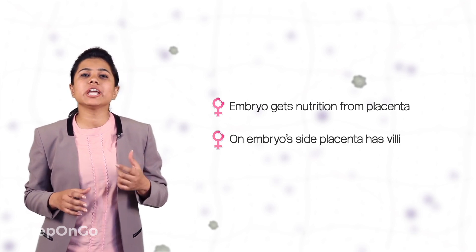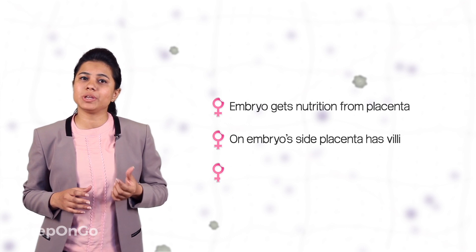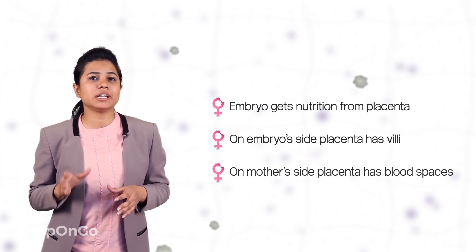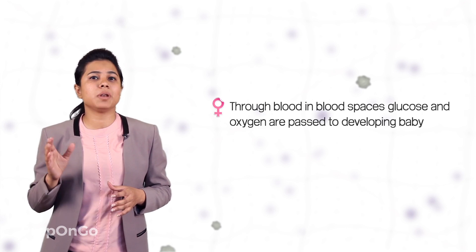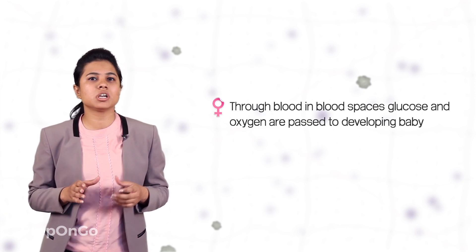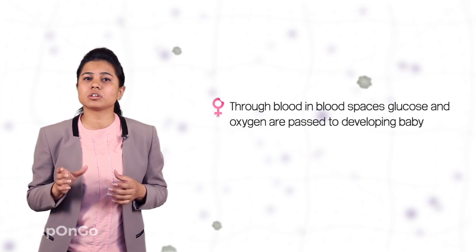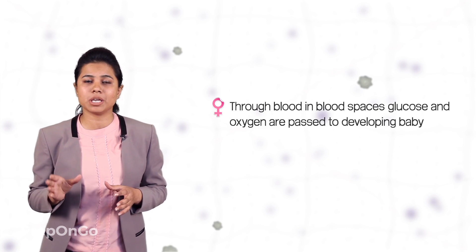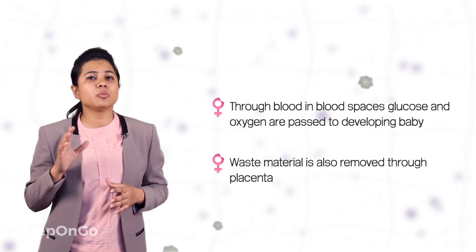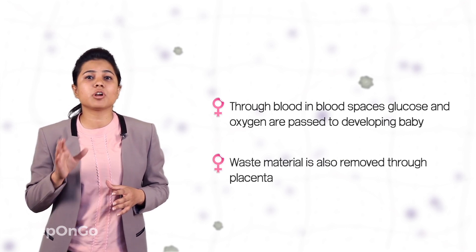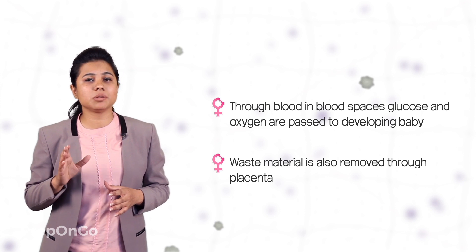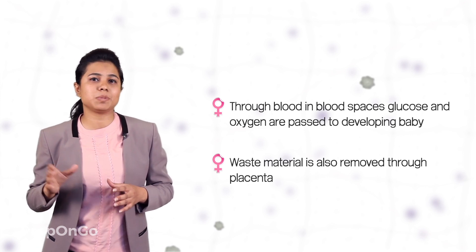On the embryo side, the placenta has villi and on the mother's side it contains the blood spaces. Villi contain the blood vessels and are surrounded by the blood spaces, and in these blood spaces blood flows through which glucose and oxygen are passed to the developing baby from the mother.